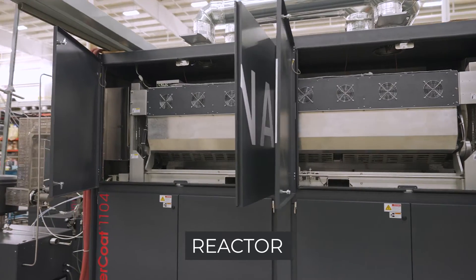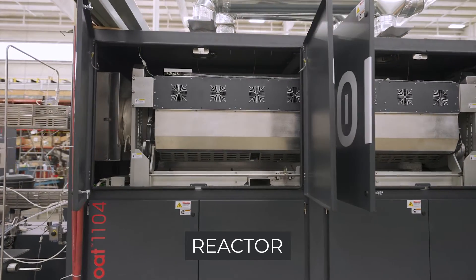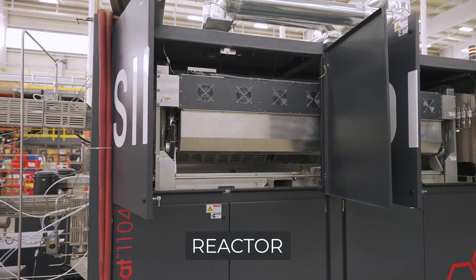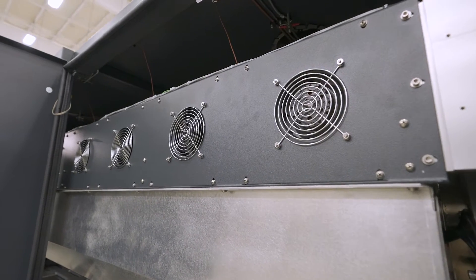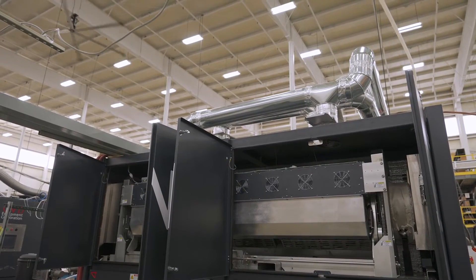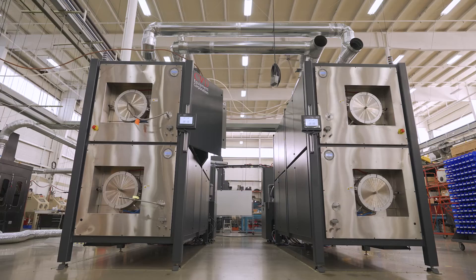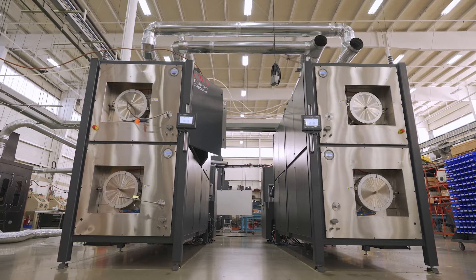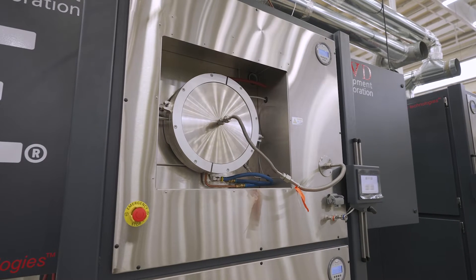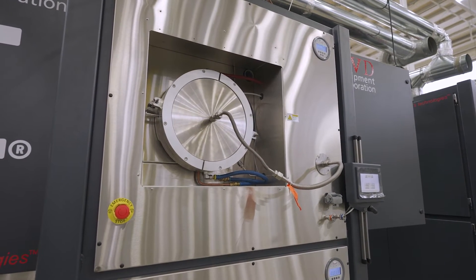This reactor is about 120 inches long with an inner diameter of about 13.5 inches. It's a very large reactor and inside is where we're processing the powder. Precursor gases are injected through the ends and the reactor is heated by a furnace up to about 700 degrees Celsius.